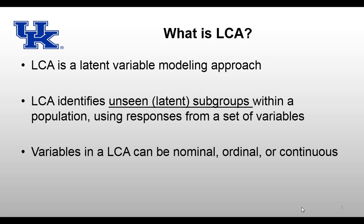But if I want to divide you into easy-going people versus not easy-going people, it's not easy because I have to infer that from your behavior. Whenever you want to infer something, it's latent — it's unseen, it's unobservable. So LCA identifies latent classes from responses from a set of variables. Whenever it comes to classifying people, LCA is a good option because the variables can be nominal, ordinal, or continuous.